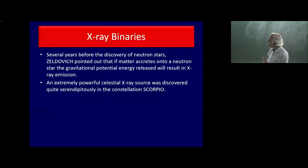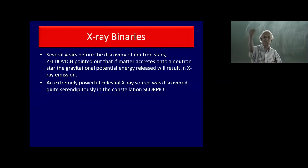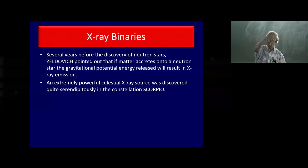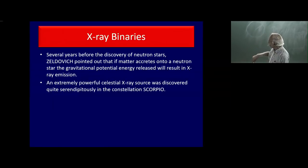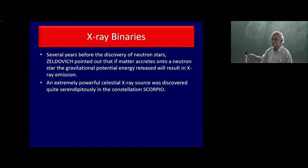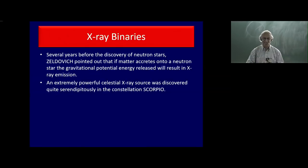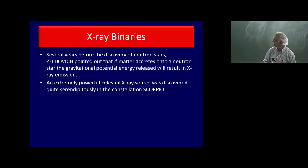But in 1962, quite by accident, a suborbital rocket flight — which just went above the atmosphere for one or two minutes and had an X-ray detector — detected a very powerful X-ray source in the constellation Scorpio. Astronomers called it Sco X-1, the first X-ray source in Scorpio. What this source was, nobody knew.